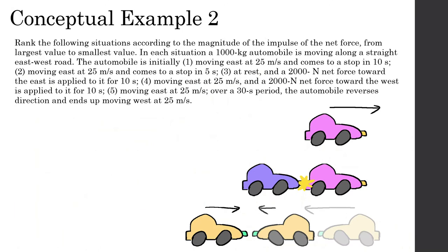Conceptual example: rank the following situations by the magnitude of impulse, from largest to smallest. A 1,000 kilogram automobile is involved in five scenarios. Situation one: moving east at 25 m/s, stops in 10 seconds — impulse = 1,000 × (0 − 25) = 25,000. Situation two: moving east at 25 m/s, stops in 5 seconds — same impulse, 25,000. Situation three: at rest, 2,000 N applied east for 10 seconds — impulse = 2,000 × 10 = 20,000. Situation four: moving east 25 m/s, 2,000 N west applied for 10 seconds — impulse = 20,000.